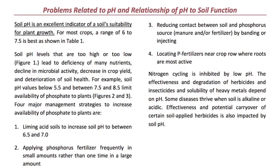Next, it talks about the problems related to soil pH, and primarily it's going to impact your nutrient availability, impacts your soil microbial activity, impacts crop yields, and can also lead to deterioration in soil health. It covers some of the four primary things that you can do — for example, applying phosphorus frequently in small amounts, reducing contact between soil and phosphorus — some of the key things you need to understand on managing for soil pH.